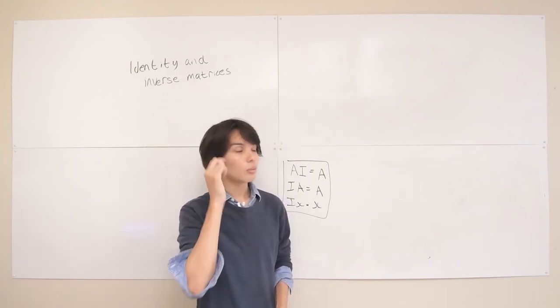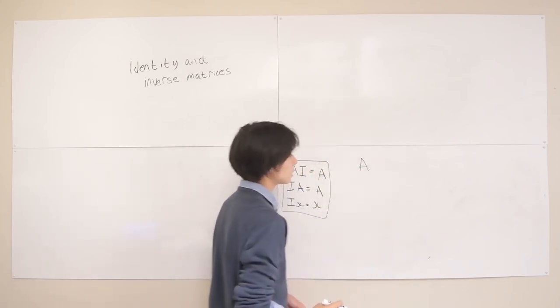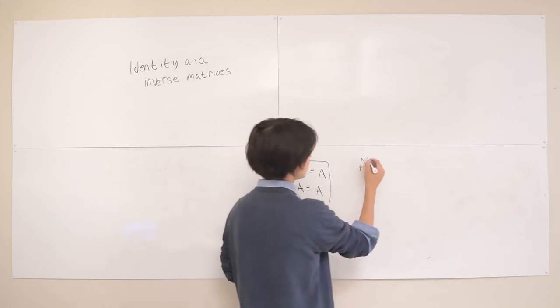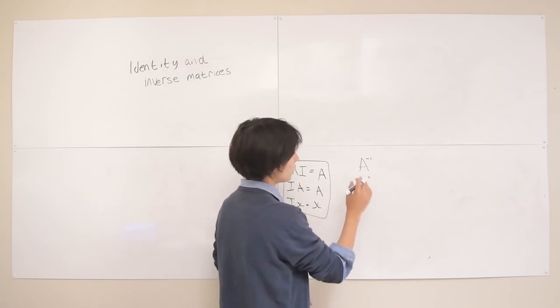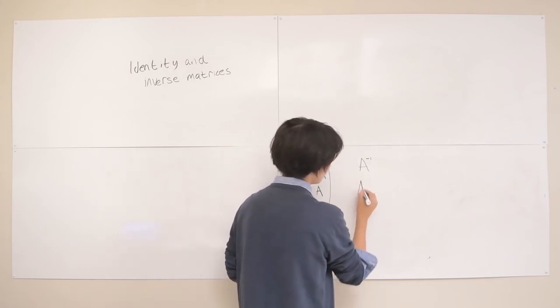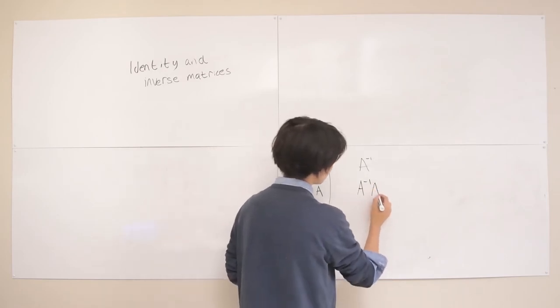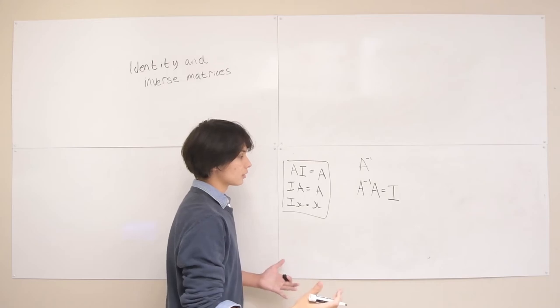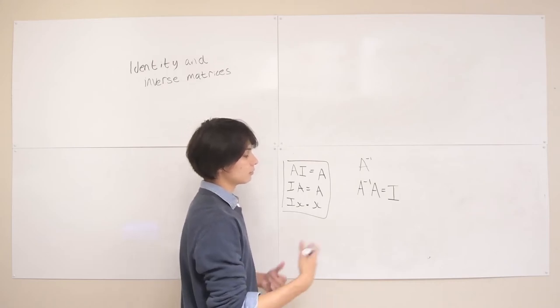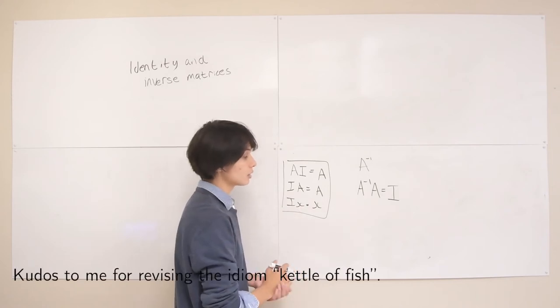So inverse matrices is, well, if we have some matrix A, we display the inverse of A with A with a negative 1 in the superscript. So the inverse is such that A inverse multiplied by A is equal to I. So that's kind of the simplest term there. Calculating this inverse is a whole other bucket of fish, and sometimes you can't calculate this inverse.